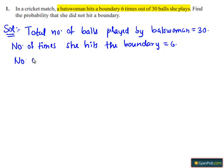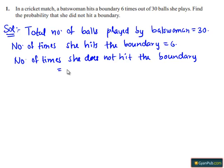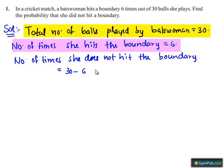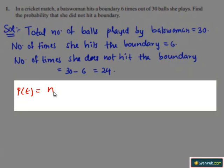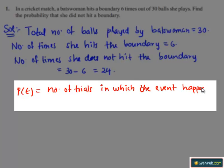Number of times she does not hit the boundary equals 30 minus 6, which is 24. We know that the probability of any event P(E) equals the number of trials in which the event happened divided by the total number of trials.